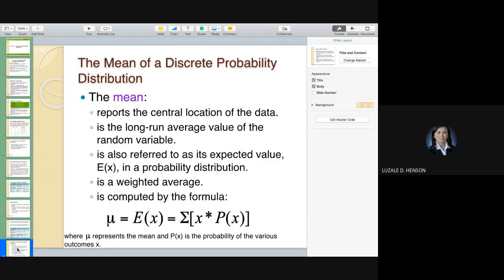So, the mean of a discrete probability distribution reports the central location of the data. It is the long-run average value of the random variable. It is also referred to as its expected value or E(X) in a probability distribution. It is a weighted average. It is computed by this formula where mu refers to the mean. And it can also be referred as E(X), which is equal to the summation of X times P(X). What is the X? It is the random variable multiplied by the probability of that random variable to happen.